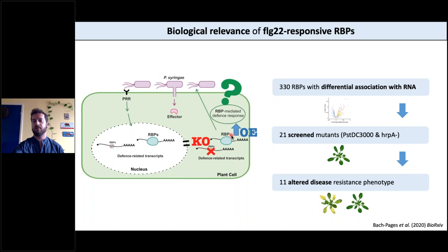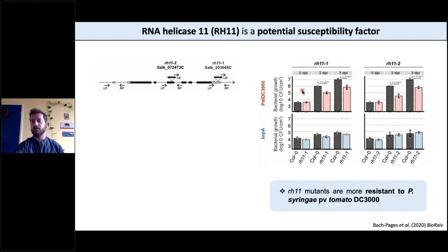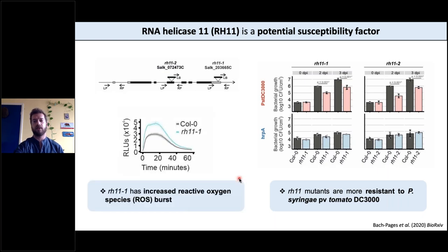Today I'm going to talk about just two examples. The first is RNA helicase 11. We obtained T-DNA insertion mutants for RNA helicase 11, challenged them with the pathogen, and saw that the mutants are more resistant to Pseudomonas syringae pv. tomato. In black you have the Col-0, whereas in red you have the mutants — there's less bacterial growth in the mutants compared to Col-0. This may be related to an increased ROS burst in the mutants.